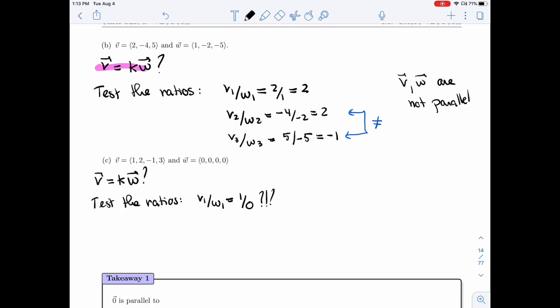And so that's an issue. So let's go back to V equals KW. W is just the zero vector. So K times the zero vector, that's the zero vector. And so this will not work.